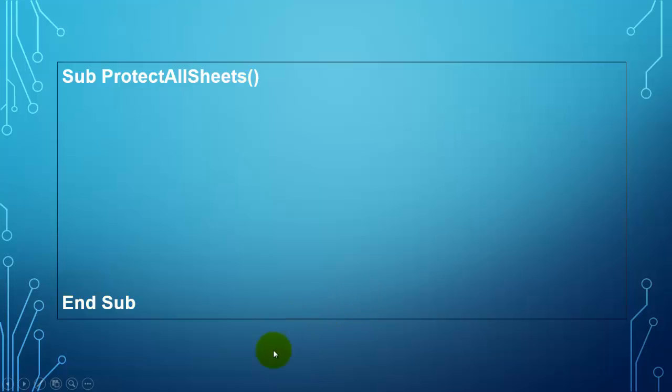Let's start with the first one. Protect all the sheets. That's how I called it. We declare a variable of the worksheet type. Not worksheets please. That would be the collection. So it will be our pointer to all the individual members in the collection.